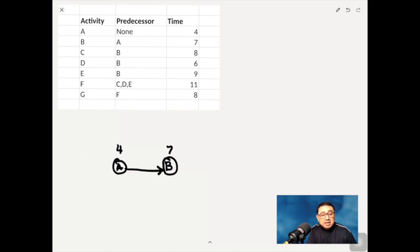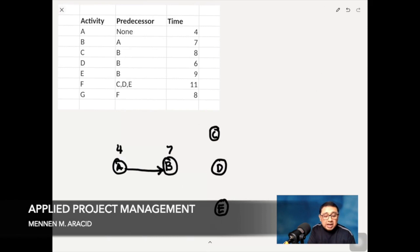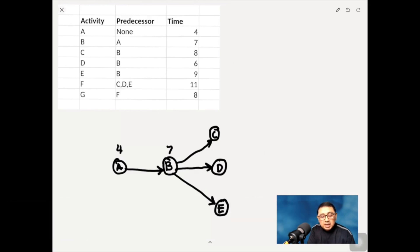And then you now go to C, D, and E, which requires B to finish. So I will put in C, and then D, and then E. And then I draw an arrow from B to C, and then B to D, and then B to E.